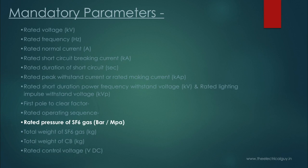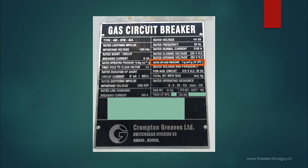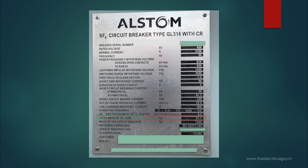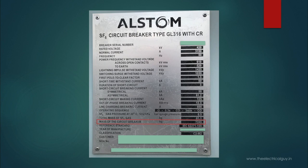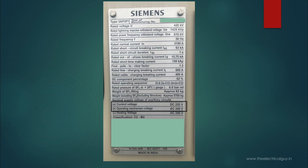Rated pressure of SF6 gas is the rated gas pressure in the breaker, which can be mentioned in bar, megapascals, or kg/cm² and varies manufacturer to manufacturer. Total weight of SF6 gas — this also varies manufacturer to manufacturer. Total weight of the circuit breaker indicates the total mass in kilograms. Rated control voltage is the DC voltage on which the closing and tripping coils work. These were the mandatory parameters as per IEC, which you will generally find on every nameplate of high voltage SF6 circuit breakers.